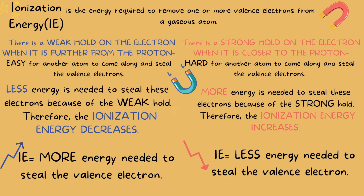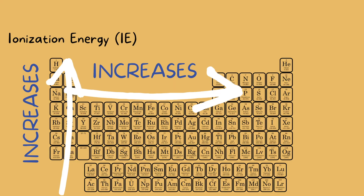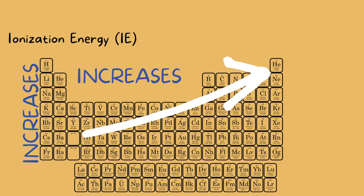The trend on a periodic table goes like this. As you go up the periodic table, the ionization energy — or IE for short — increases. And as you go left to right, the IE also increases. So generally it increases going in this direction.